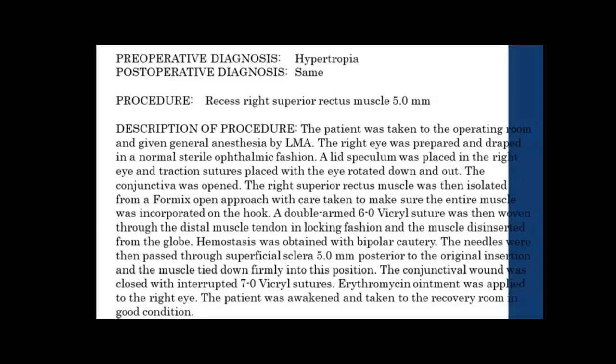Hemostasis was obtained with bipolar cautery. The needles were then passed through superficial sclera, 5 millimeters posterior to the original insertion, and the muscle tied down firmly into this position. The conjunctiva wound was closed with interrupted 7-0 Vicryl sutures. Erythromycin ointment was applied to the right eye. The patient was awakened and taken to the recovery room.